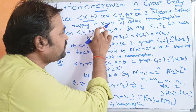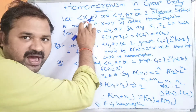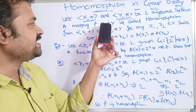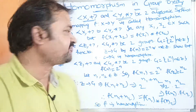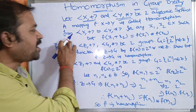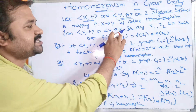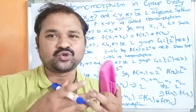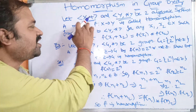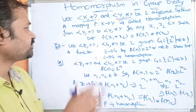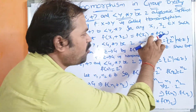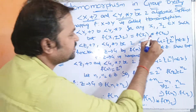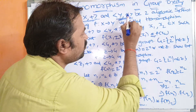A mapping f from x to y — where x is algebraic system one's set and y is algebraic system two's set — is called a homomorphism from the first algebraic system to the second algebraic system, for any x₁, x₂ belonging to x, such that f(x₁ + x₂) = f(x₁) ⋆ f(x₂). Here + is the binary operation of algebraic system one, and ⋆ is the binary operation of algebraic system two.